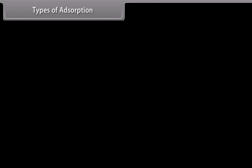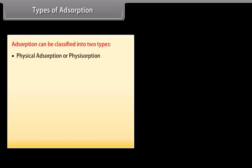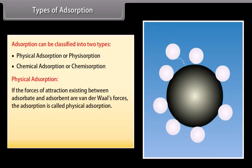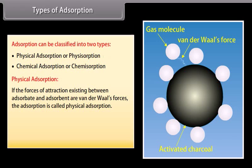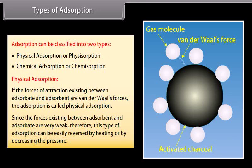Depending upon the nature of forces existing between adsorbate molecules and the adsorbent, adsorption is classified into two types: physical adsorption and chemical adsorption. In physical adsorption, the forces of attraction between adsorbate and adsorbent are Van der Waals forces. Since these forces are very weak, this type of adsorption can be easily reversed by heating or by decreasing the pressure.